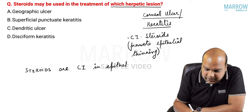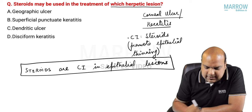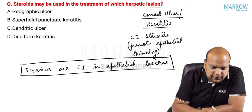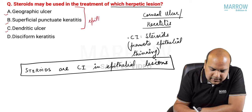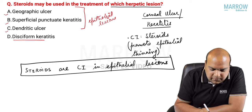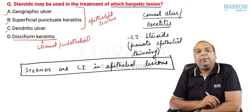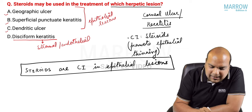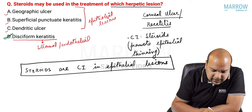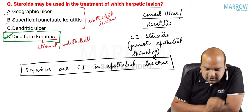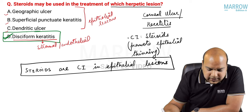If you understand that principle, this question becomes a cakewalk. Reading the options for herpes: geographic ulcer, superficial punctate keratitis (SPK), and dendritic ulcer are all epithelial lesions. But disciform keratitis is a stromal or endothelial lesion - so yes, steroids can be used in disciform keratitis.